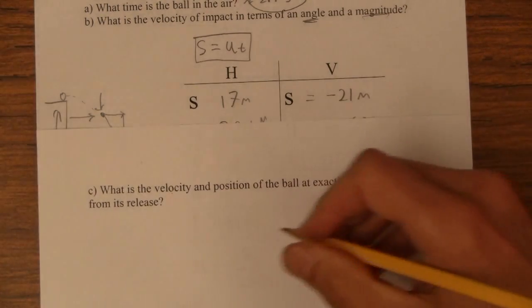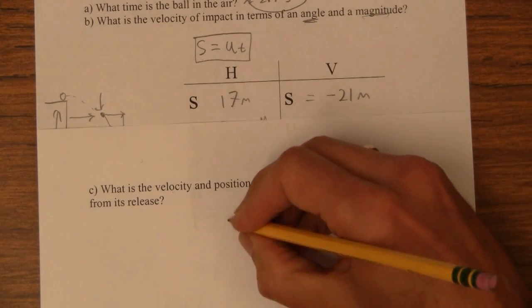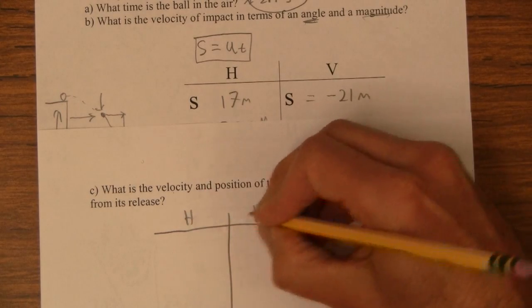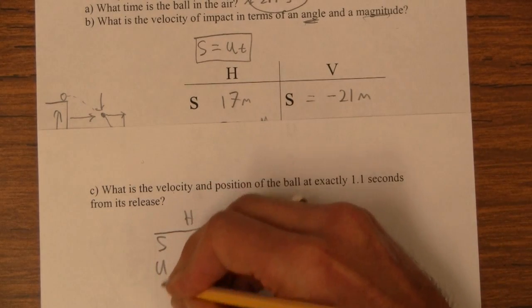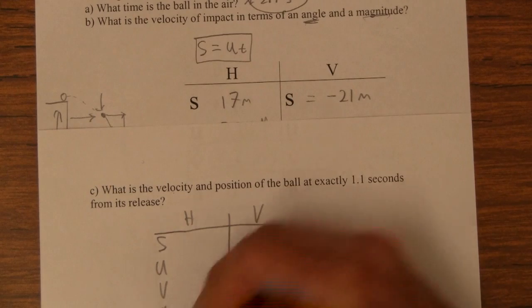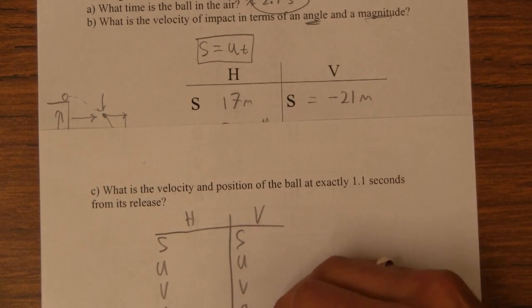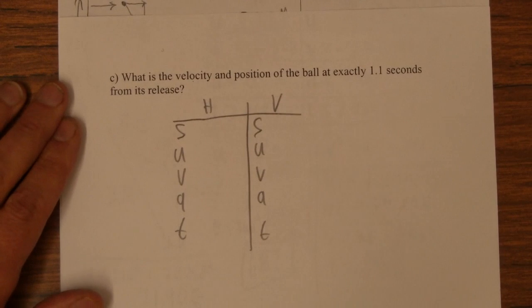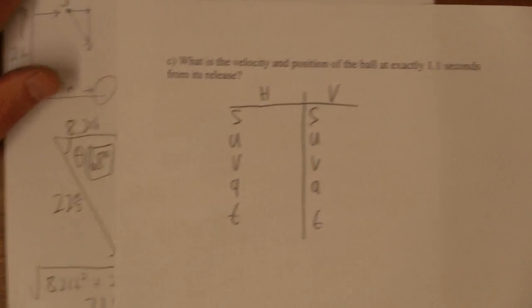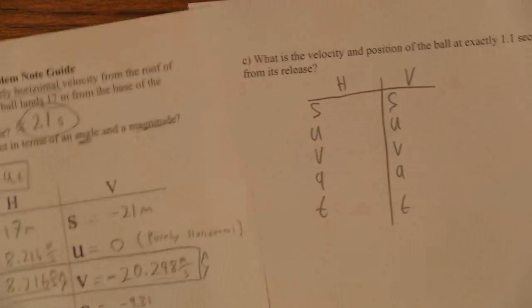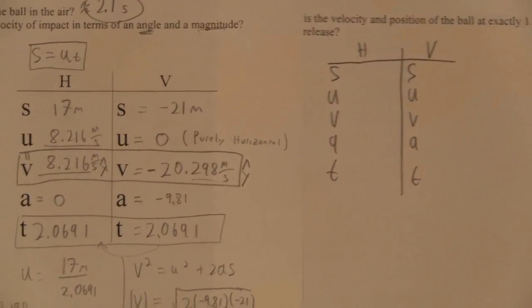So what we're going to do is we're going to set up a horizontal vertical table here. We've got to set up our own now, it's kind of wild, H and V. And then displacement, initial velocity, final acceleration, time. And now we've got to figure out which things we can sort of steal from that other one, right? Which ones can we kind of steal from that?